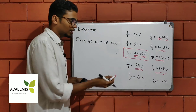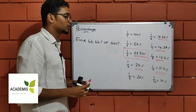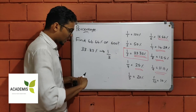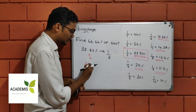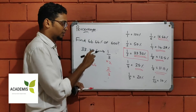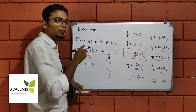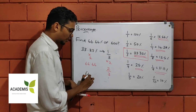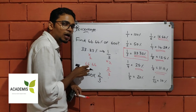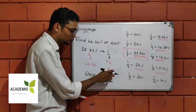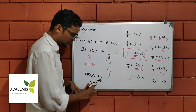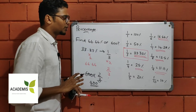Find 66.66% of 600. We know that 33.33 is 1 by 3. Since 66.66 is double 33.33, it corresponds to 2 by 3. So 66.66% of 600 means 600 multiplied by 2 by 3, which gives us 400.